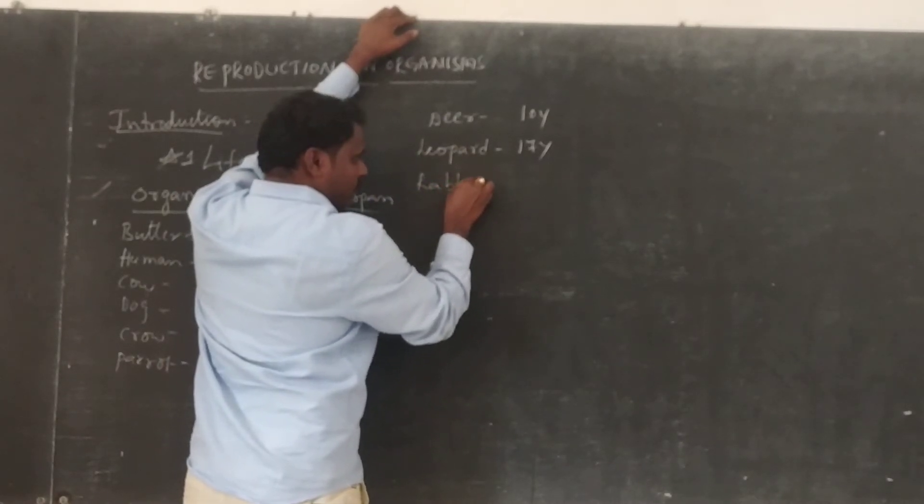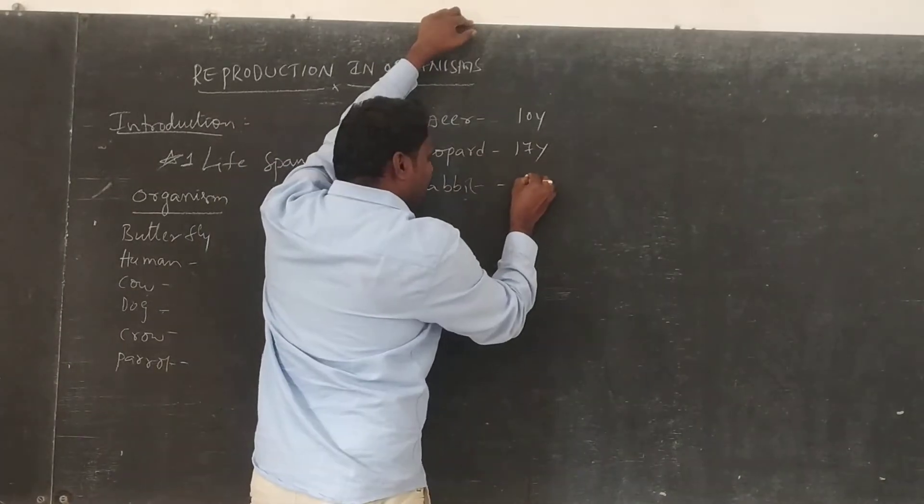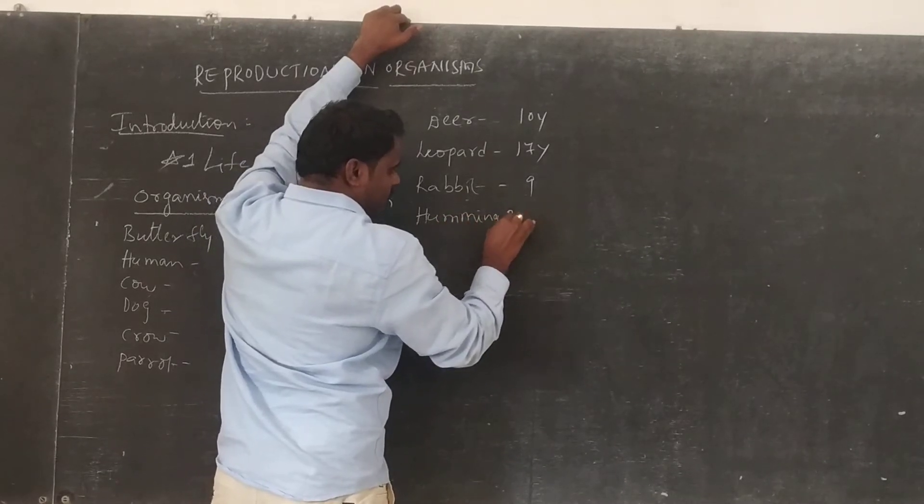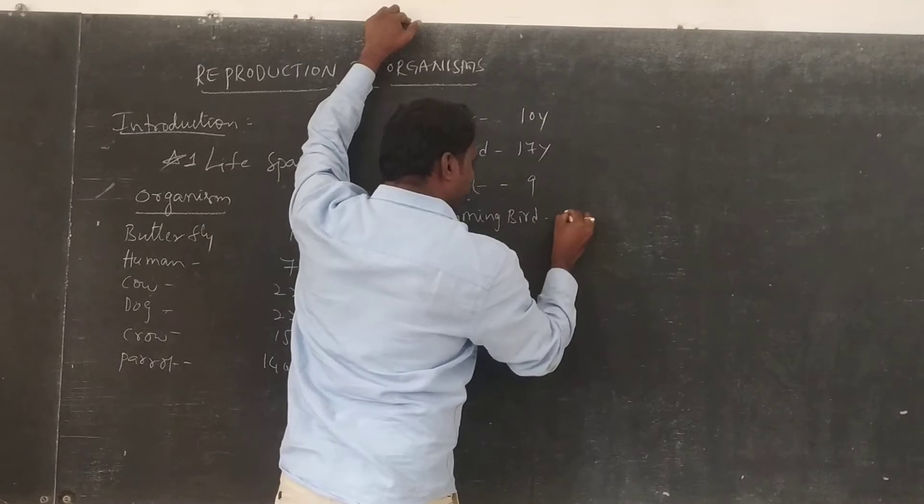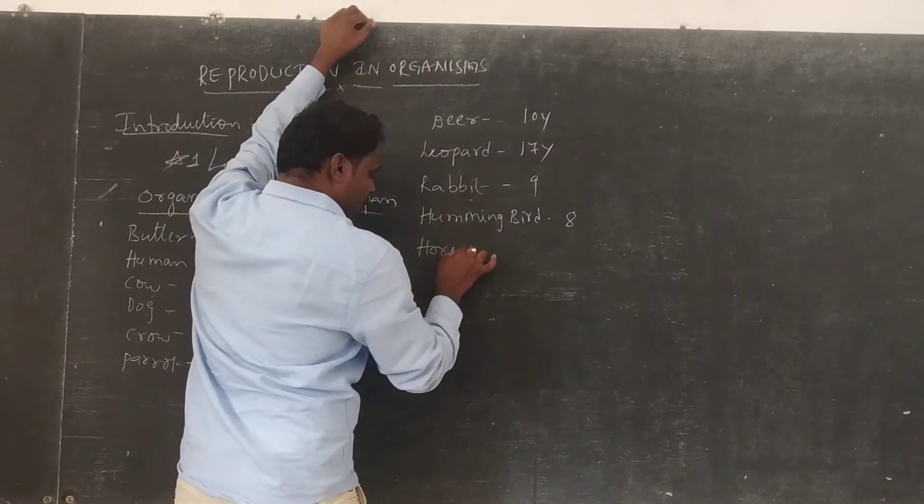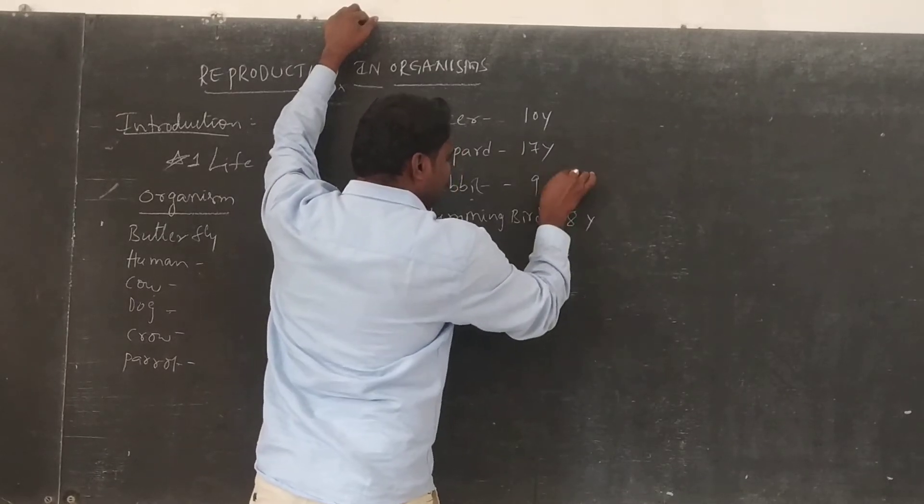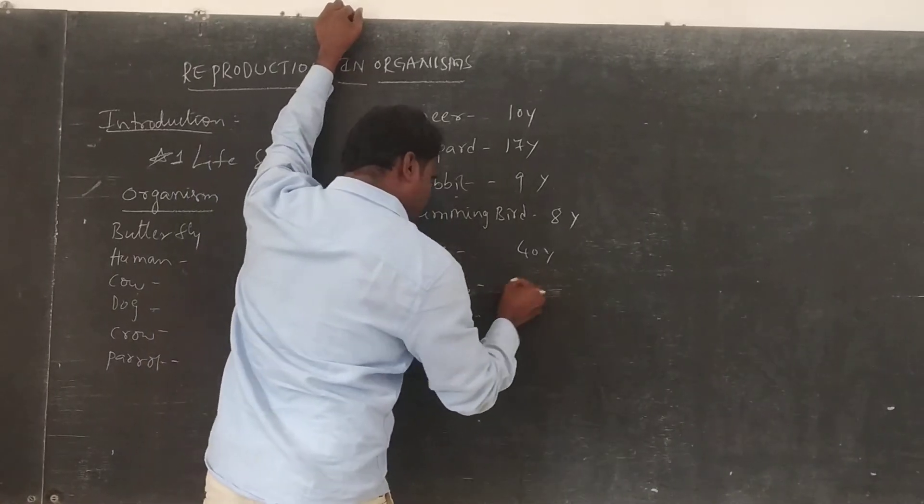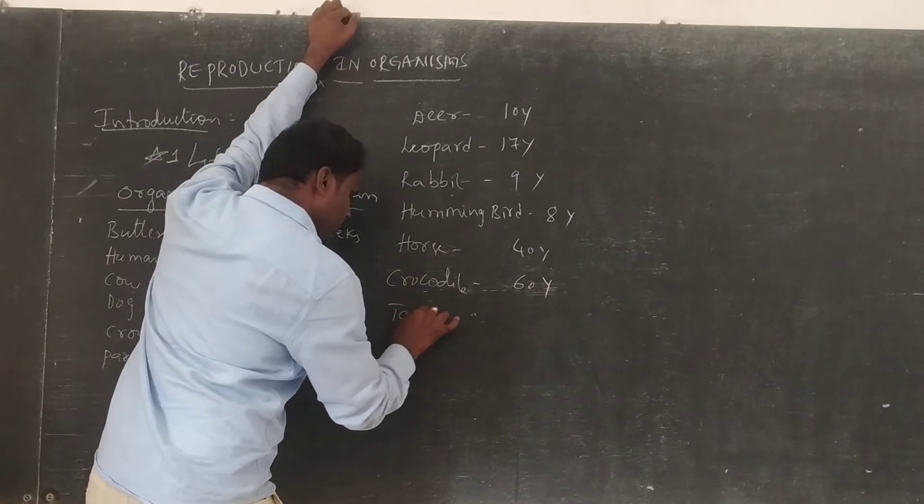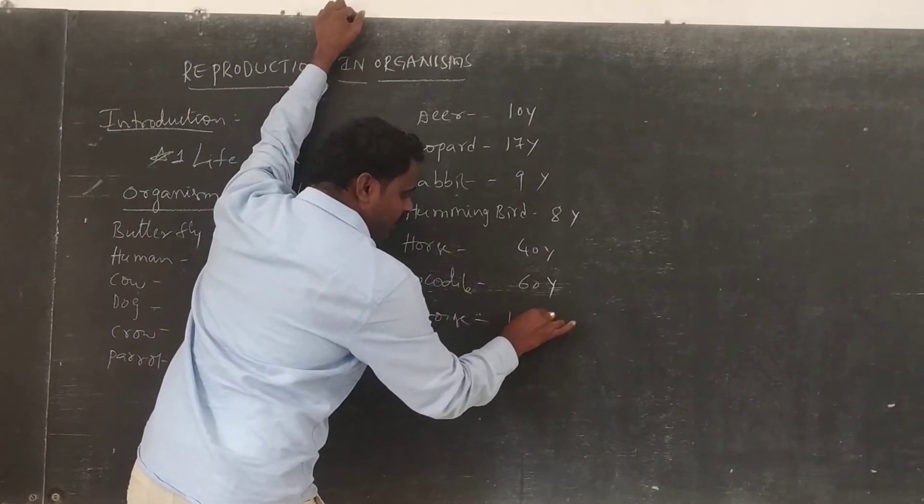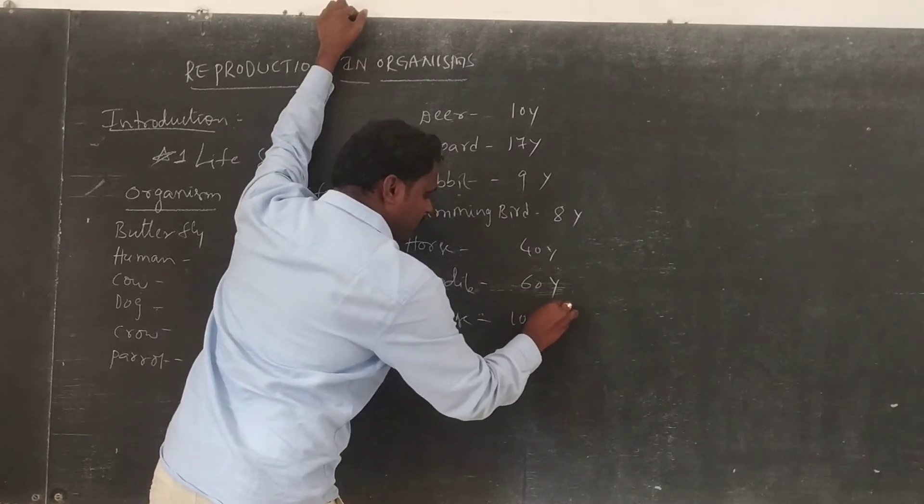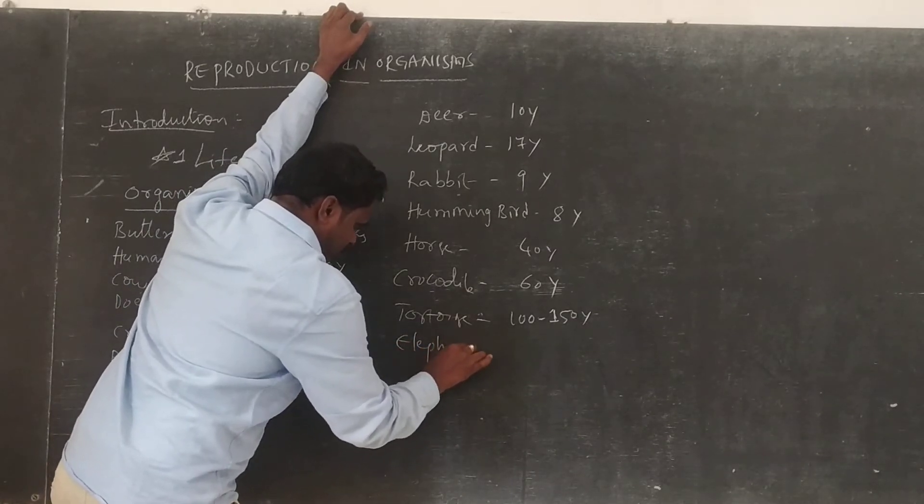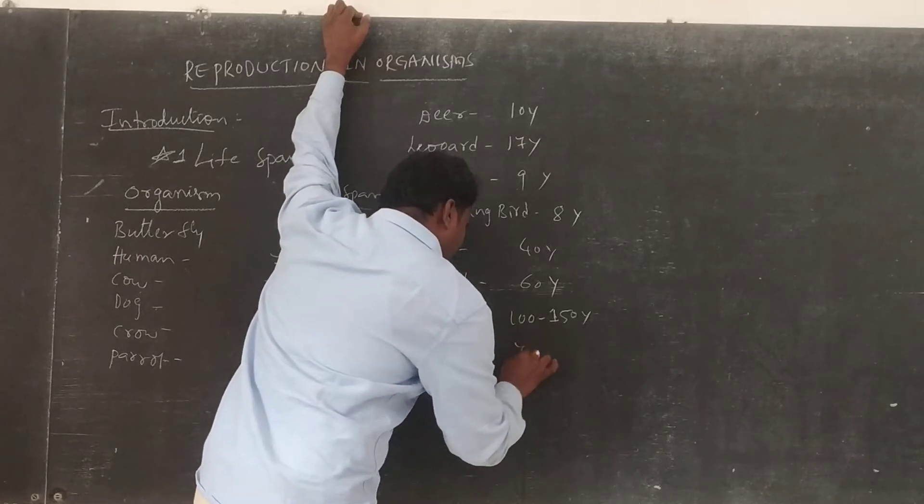Hummingbird's lifespan is 8 years, horse's lifespan is 40 years. Crocodile's lifespan is 60 years, tortoise's average lifespan is 100 to 150 years. And elephant, elephant's lifespan is nearly 70 years.